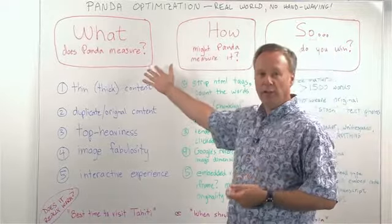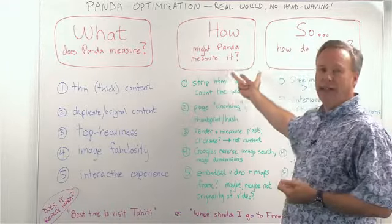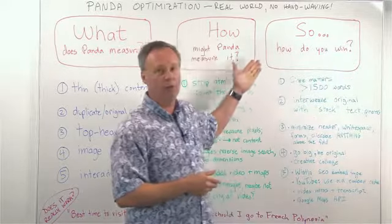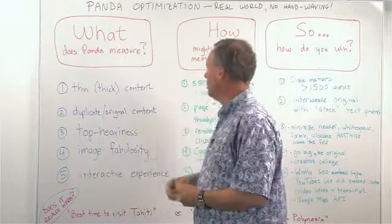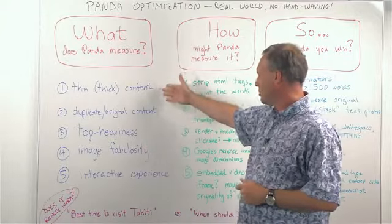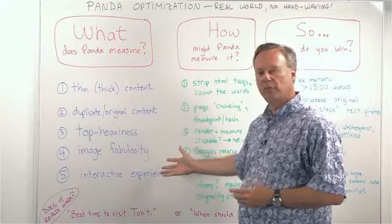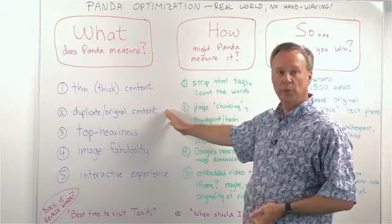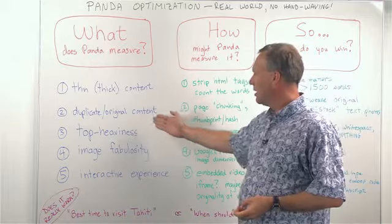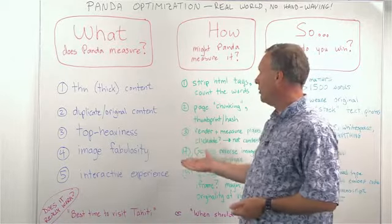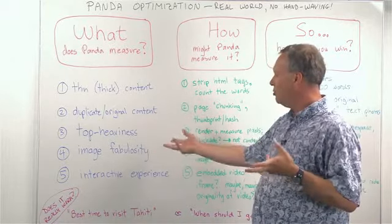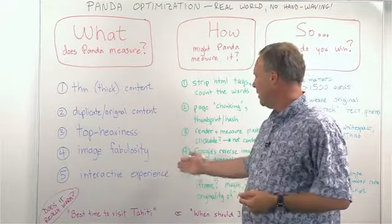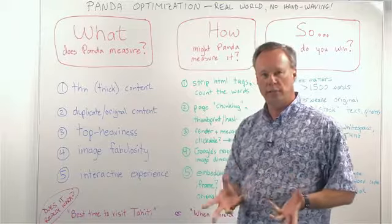We're going to talk about, first of all, what does Panda measure? Secondly, how might Panda actually go about measuring these factors on your site? And then lastly, what are you going to do to win based on those factors? Here is the list of the major factors: thin or thick content, duplicate or original content, the top-heavy part of the Panda algorithm, how to come up with fabulous images and how Panda will measure that, and rich interactive experience.